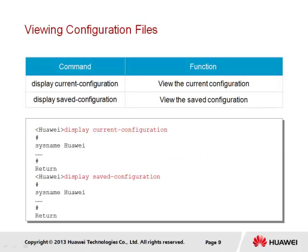Viewing the two configuration files used by VRP is achieved through the display current configuration and display saved configuration commands. The display current configuration will display commands that have been configured and are currently operational within VRP. If the device is restarted, the current configuration file will be lost and replaced with the saved configuration file if one exists. It is therefore necessary to save the configuration if the contents of the current configuration file are to be maintained. If the saved configuration file does not exist, a notice will inform of the fact.